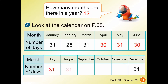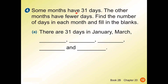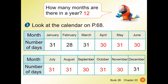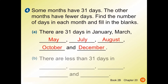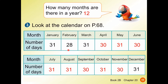Fill out the number of days for the 12 months. Question four: some months have 31 days, the other months have fewer days. Find the number of days in each month and fill in the blanks. There are 31 days in January, March, May, July, August, October, and December. For part B, there are fewer than 31 days: February has only 28 days, as do April, June, September, and November.